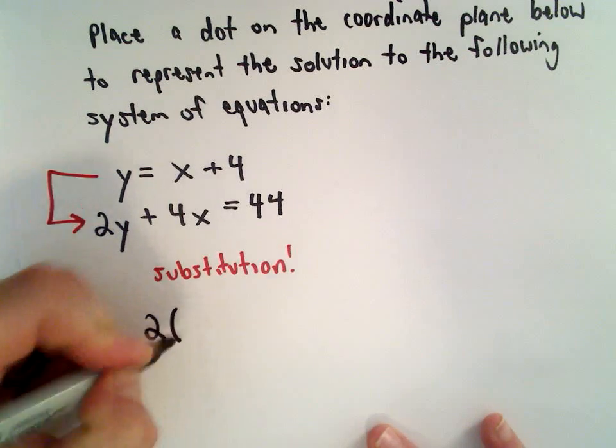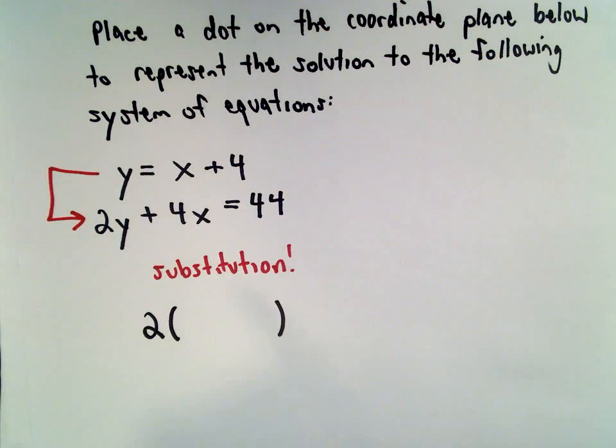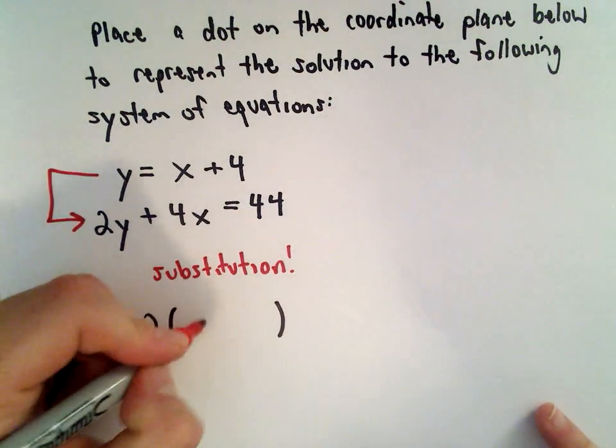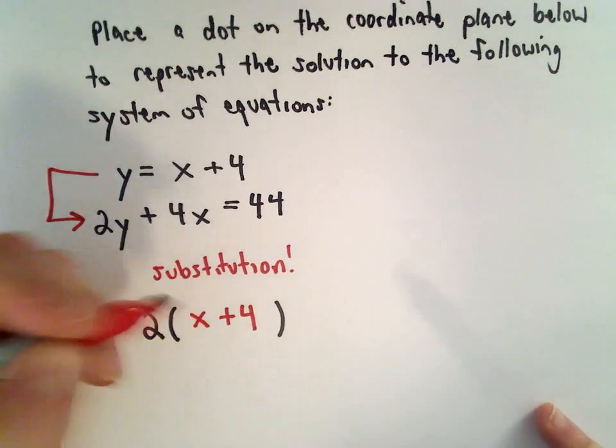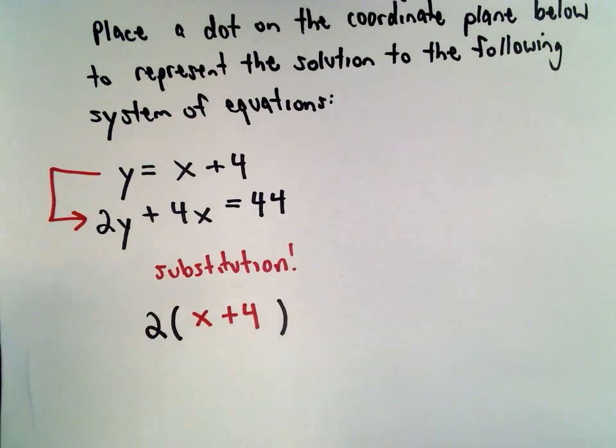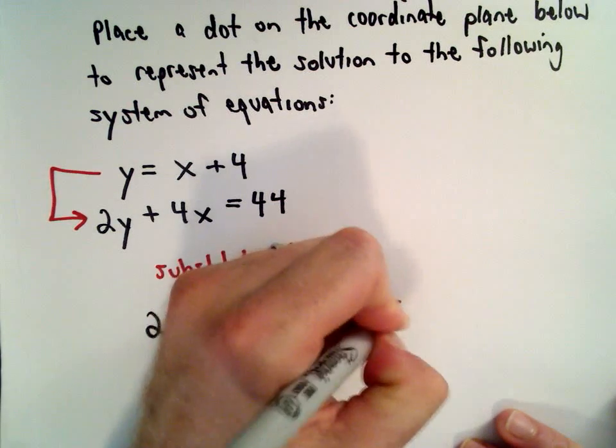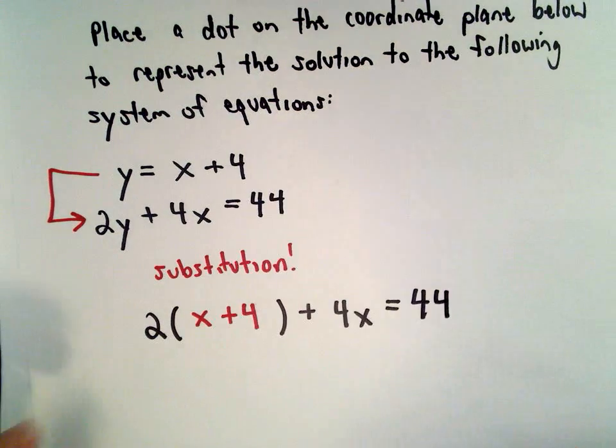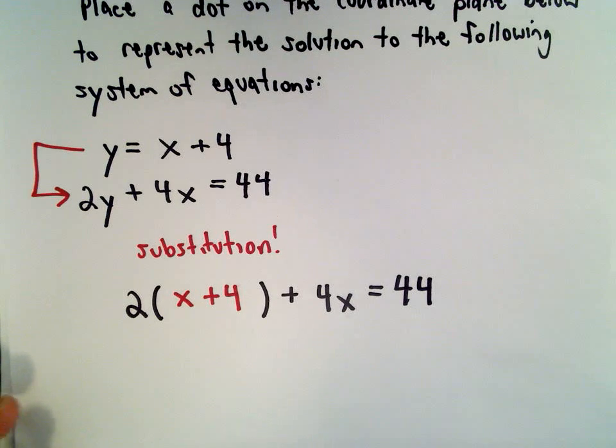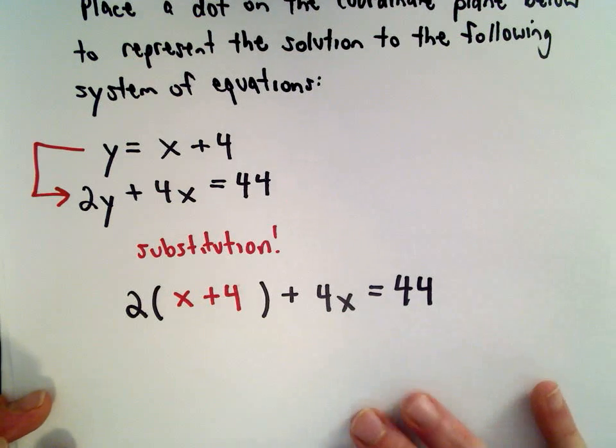So I've got 2 times y, but from the first equation I know that y equals x plus 4. Then we're still left with positive 4x equals 44. The idea is we can use this to solve for x, and then we can go back and solve for y.